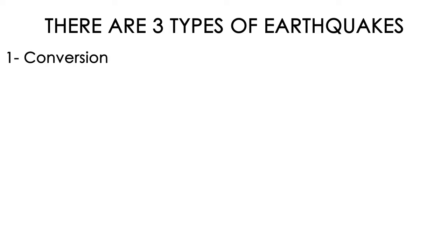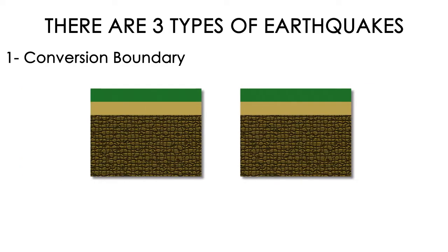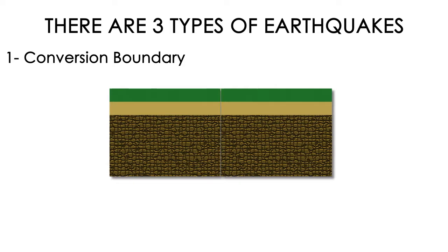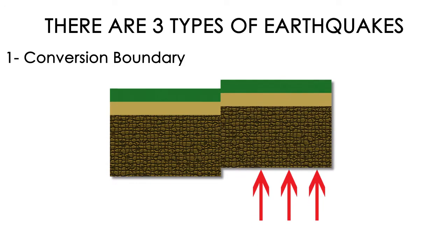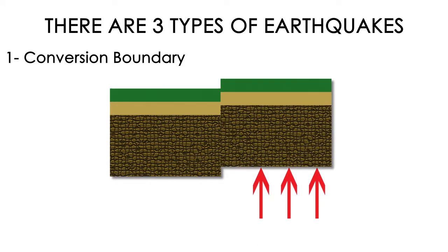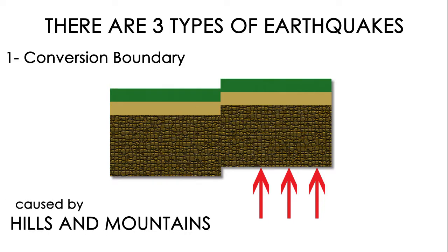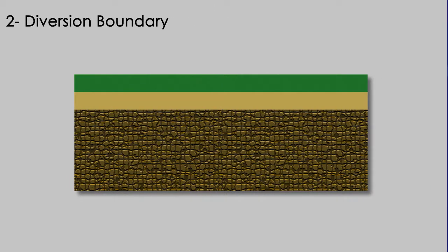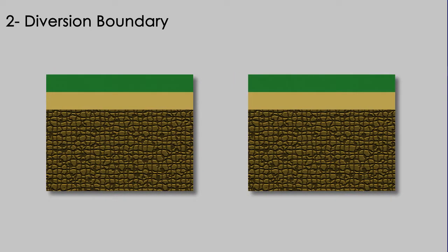The first one is called the convergent boundary. In this type of earthquake, one plate is forced to slip over another. This type of earthquake is the cause of many hills and mountains. The second one is called the divergent boundary. In this one, the plates slip past each other, forming a rift zone or an empty space.